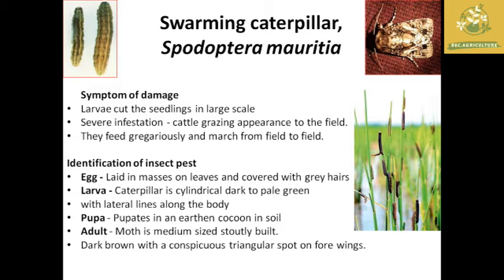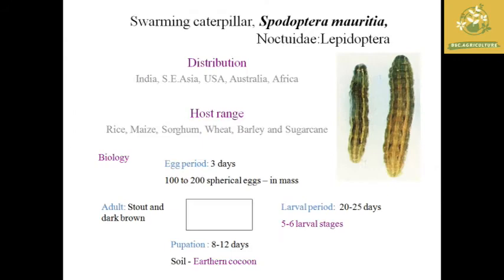For identification of army worm: eggs are laid in masses on leaves and covered with gray hairs. Larval characteristics: cylindrical, dark to pale green in color with lateral lines along the body. Pupa: pupates in an earthen cocoon in soil. Adult is a medium-sized, stout-bodied moth, dark brown with a triangular spot on the forewings. Distribution: India and Southeast Asian countries, Australia, and Africa. Host range: rice, maize, sorghum, wheat, barley, and sugarcane.